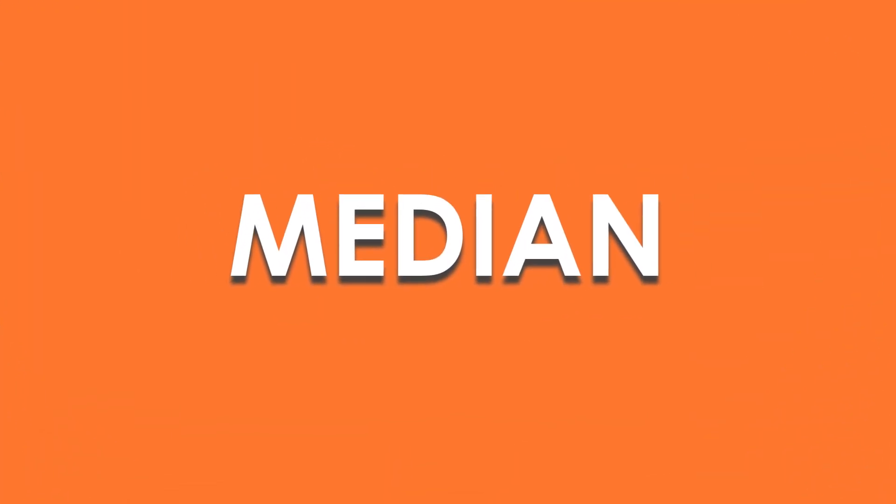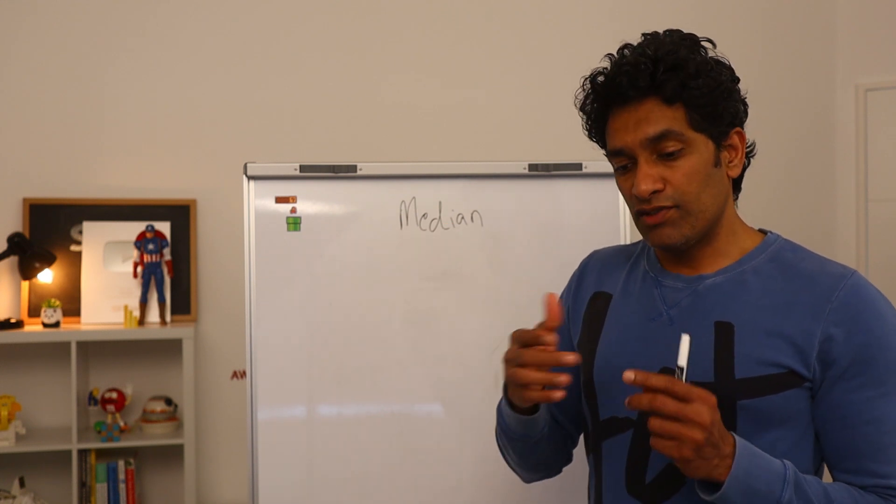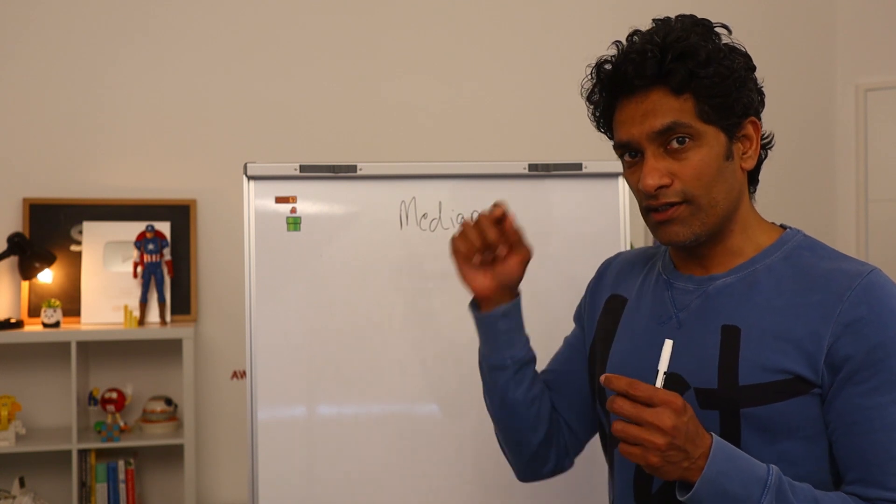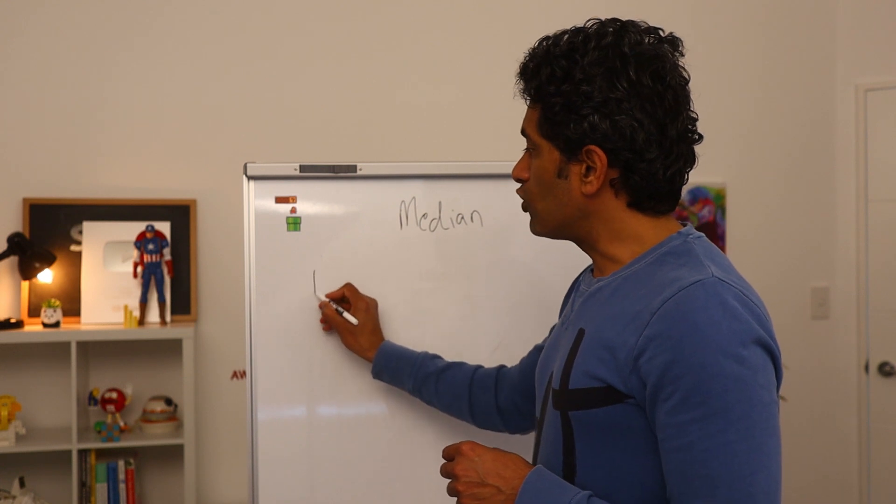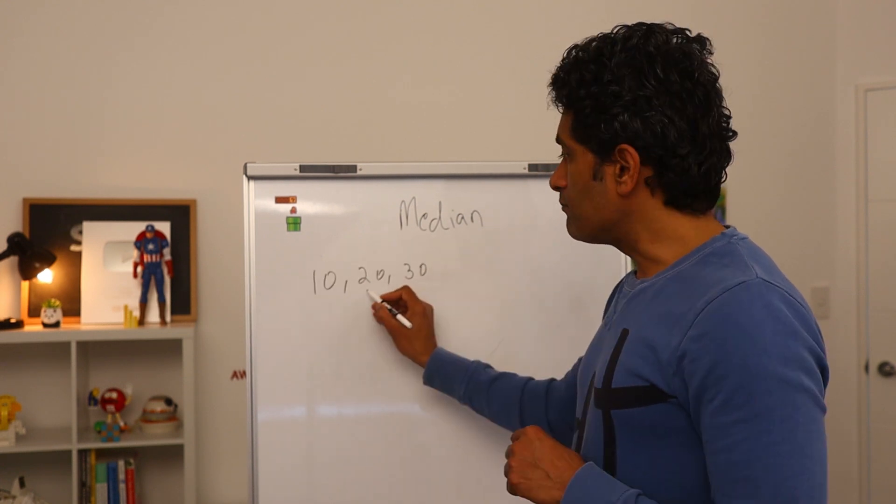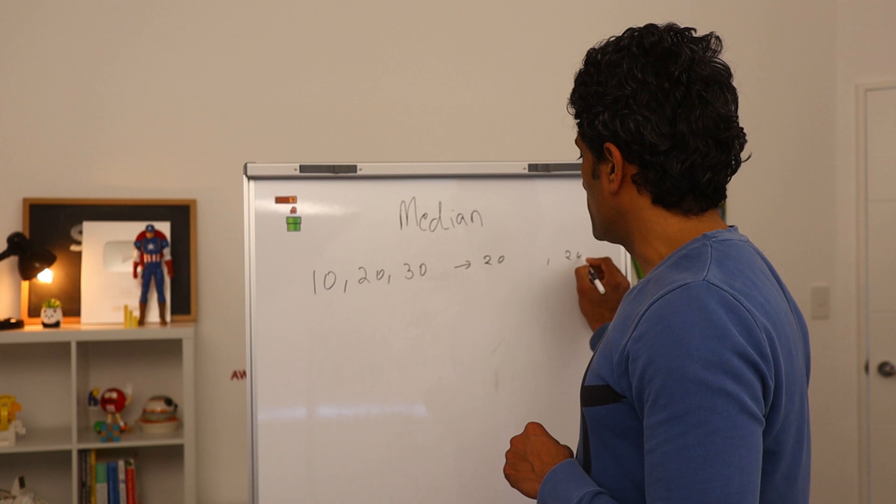Now let's talk about median. Median refers to the midpoint of the data. So if you take all your data, arrange it in ascending or descending order, the middle point is your median. Going back to our example of 10, 20, 30, the median here is 20. So this is kind of same as the average.